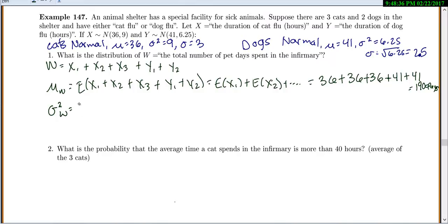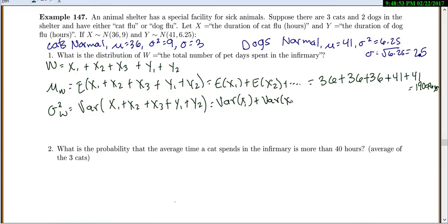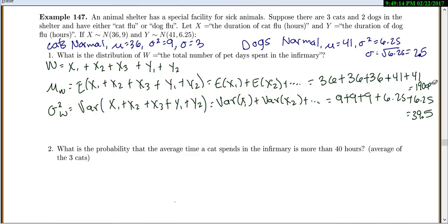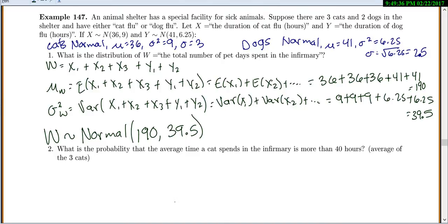The variance of W equals the variance of X1 plus X2 plus X3 plus Y1 plus Y2 — we just add each individual variance. Each cat has variance 9, so 9 plus 9 plus 9, and each dog has variance 6.25, so 6.25 plus 6.25. That gives 39.5 hours. Since we're adding normal variables, W is still normal with mean 190 and variance 39.5.